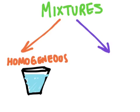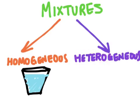The other type of mixture is a type of mixture where you can actually see the different parts of the mixture. We call these types of mixtures heterogeneous mixtures. The root word hetero means different, and so these mixtures look different throughout the mixture.